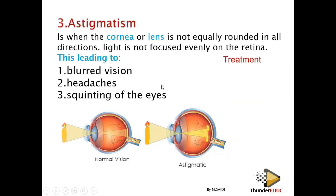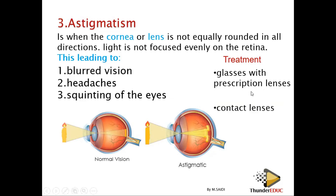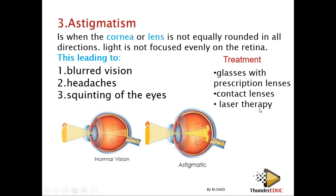To treat astigmatism: number one, you can put on glasses with prescription lenses — the prescription depends on the severity of your astigmatism. Number two, contact lenses placed on the eye to bring about normal focusing of the image. Number three, laser therapy, where the cornea is reshaped so that it becomes evenly curved.